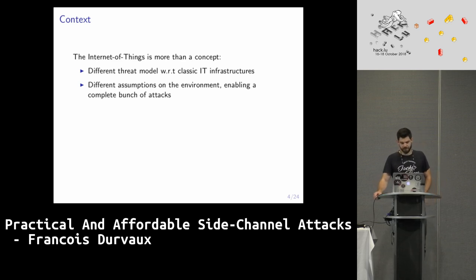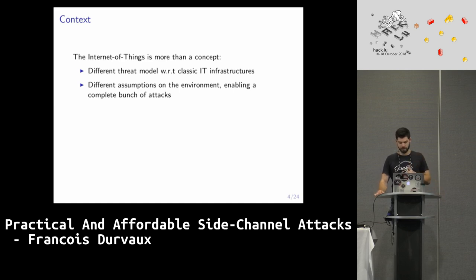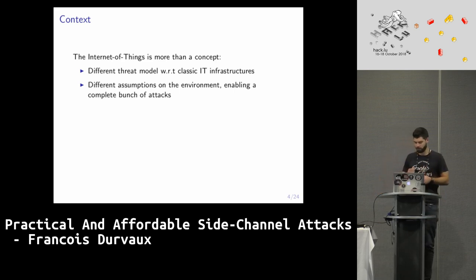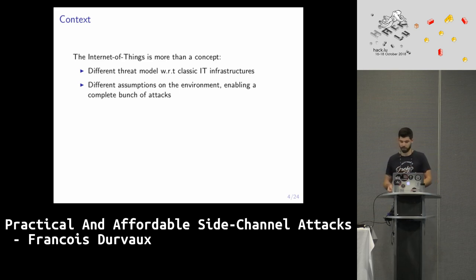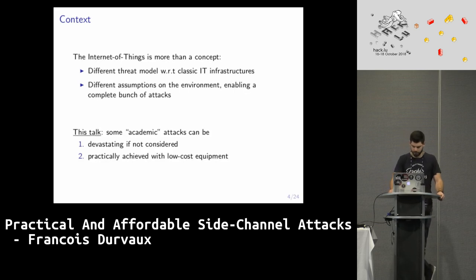The context for such attacks: Internet of Things. The most important thing here is that now, with the Internet of Things, the assumption that you control the environment of your device is no longer valid. You need to see things differently. And it opens the gate to a whole new bunch of attacks — it's not really new, but it's applicable now.